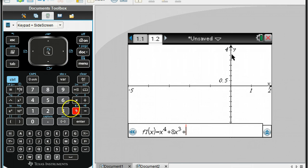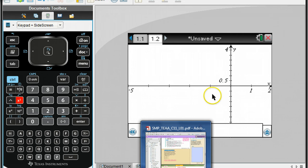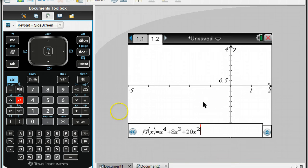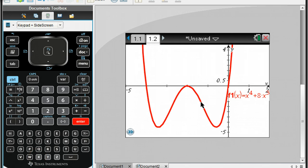That'll be plus 20x squared. And you can use a squared button, so it automatically puts it in as an exponent. Plus 16x. And when you hit enter now, we should get a graph looking like this.